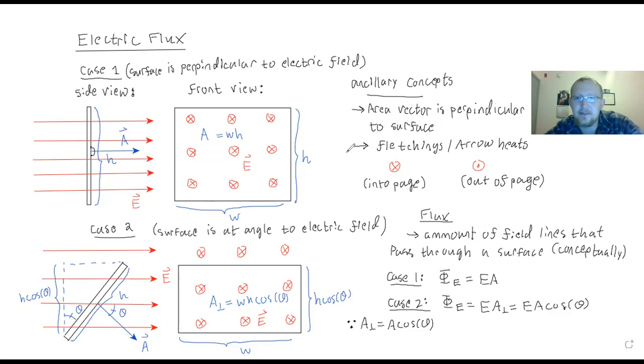Secondly, the concept of fletchings and arrowheads. As you can see, this is a fletching. It's like looking at an arrow from behind. And this is an arrowhead and that's like looking at an arrow from the front. And so what that means for field lines or for vectors is if we see a fletching, it means that the vector is going into the page. And if we see an arrowhead, it means the vector is coming out of the page.